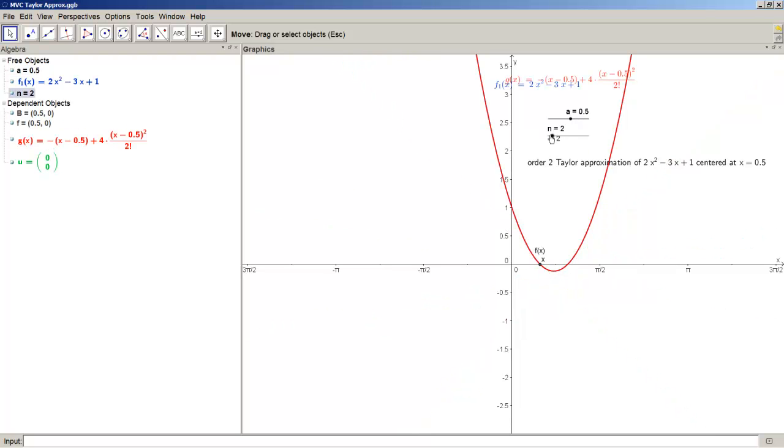the second order is exactly that function. And notice that g(x) here, this red function, it doesn't change because all the other terms go to zero. Because it's second order. It's order two. It's exact.